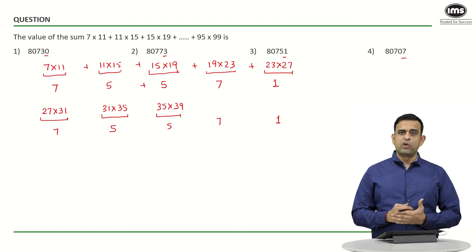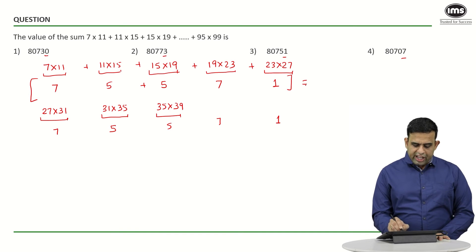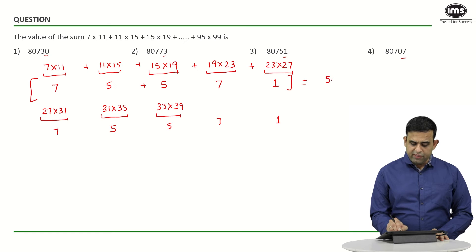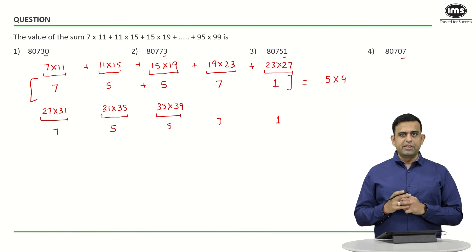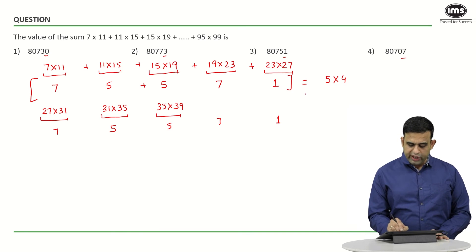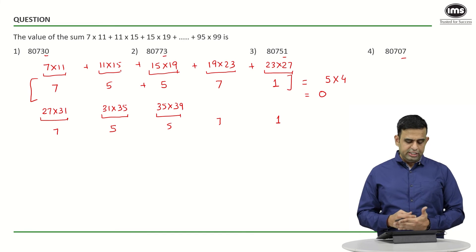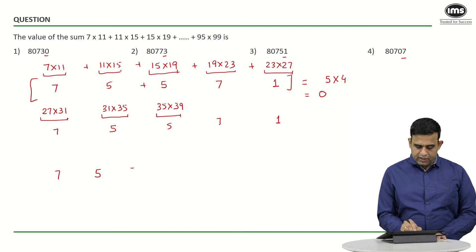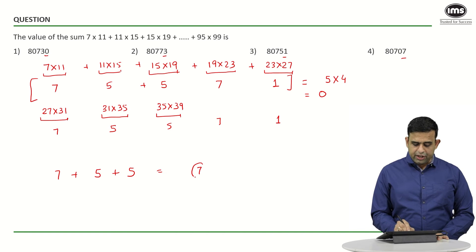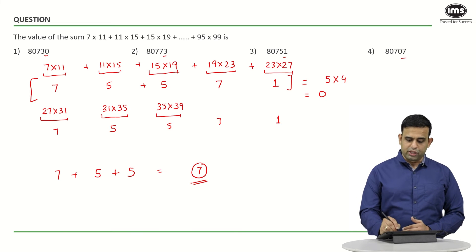With 23 terms total, we have 4 complete groups of 5 terms (20 terms), each group's last digits summing to 7+5+5+7+1 = 25, ending in 5. Four such groups end in 0. The remaining 3 terms have last digits 7, 5, 5, which sum to 17, ending in 7. So the total ends in 7, confirming the answer is 80707, option 4.